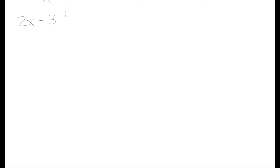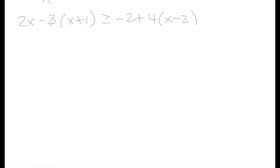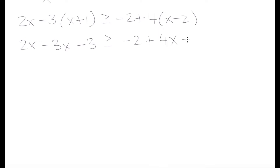Let's go over another example. Let's say we had 2x minus 3 times x plus 1 is greater than or equal to negative 2 plus 4 times x minus 2. When you first look at this it seems complicated, but we're going to solve it the same way. Let's start by expanding the terms in brackets. 2x stays the same, and we expand minus 3 to get minus 3x minus 3.